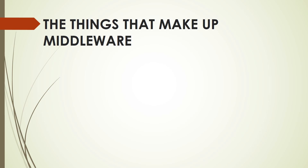The things that make up middleware — middleware sits between applications. In order to connect two systems via an integrated solution, a number of things have to happen. Applications want to exchange data via messages. Messages are snippets of data that have an agreed-upon meaning to both applications being integrated. The piece of data can be very small, such as the phone number of a single customer that has changed, or very large, such as the complete list of all customers and their associated addresses. When two applications wish to exchange a piece of data, they do so by wrapping it in a message.